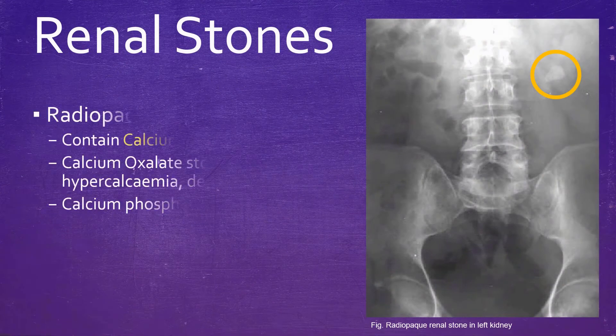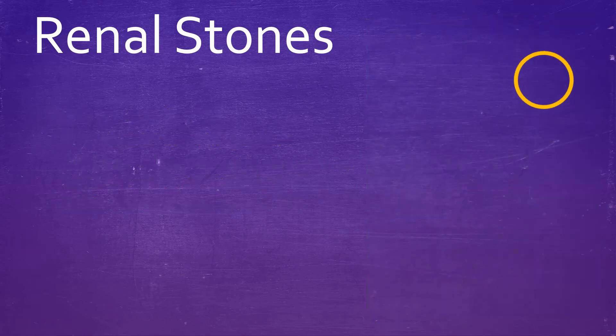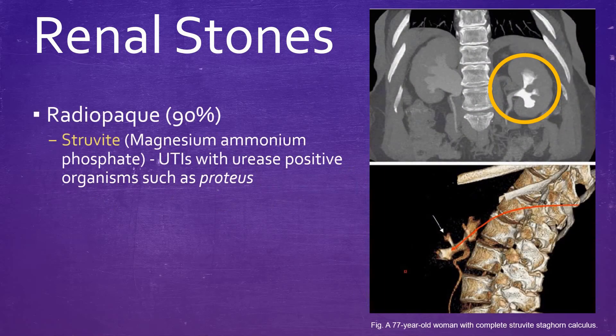Renal stones can be divided into two types. The first is radio-opaque, comprising 90% of stones. They contain calcium or magnesium. Calcium oxalate stones are found in hypercalciuria, hypercalcemia, and dehydration, whereas calcium phosphate stones are often found in UTI. Struvite stones consist of magnesium ammonium phosphate, seen in urease-positive UTI organisms such as Proteus.